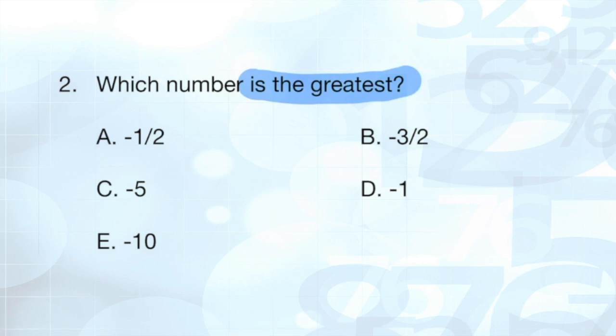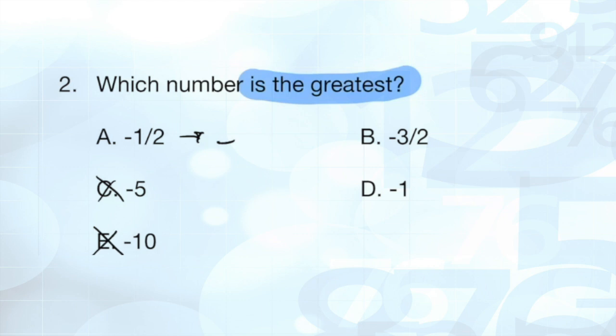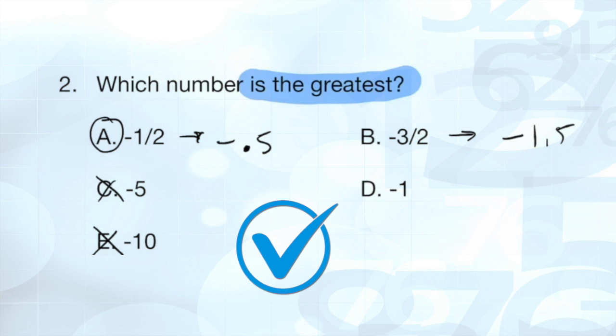Negative ten would actually be the least amount. It would be farthest away from zero, because the more negative you get, the further away from zero you become. So I can also eliminate negative five. Now I'm down to negative one-half, negative three over two, or negative one. Negative one-half, if you put these into decimals, would be like negative 0.5. Negative three over two would be like negative 1.5. And then we have D as negative one. So out of these options, A is going to be the correct answer, because negative 0.5 is closer to zero than any of the other options that we have.